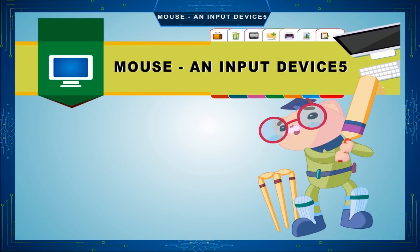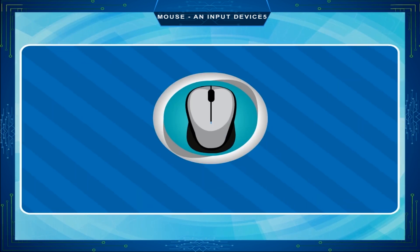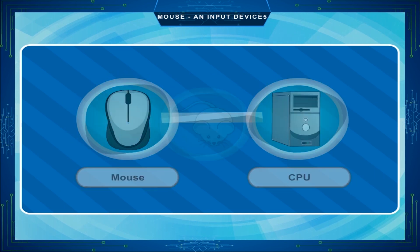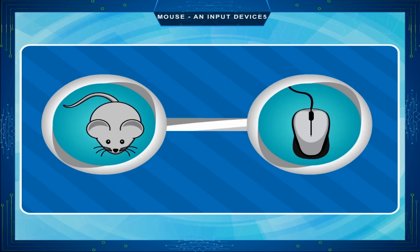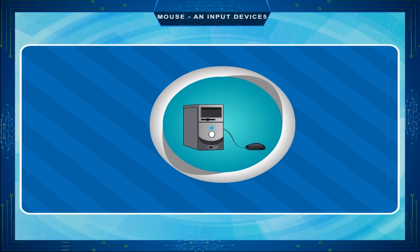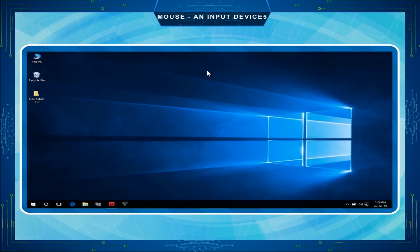Chapter 5: Mouse. A mouse is an input device that is used to give instructions to the CPU. Like a real mouse, it has a body and a long tail. It is small in size and has a tail which is attached to the CPU. It helps us to point and select an item on the monitor.